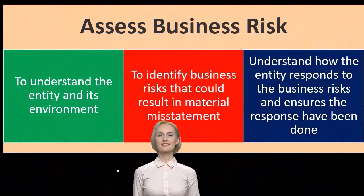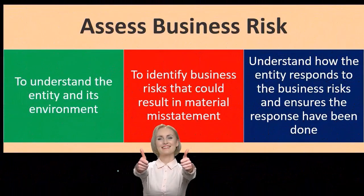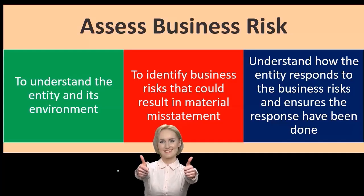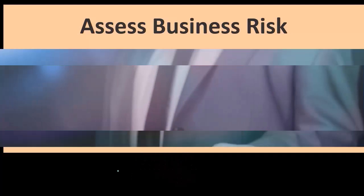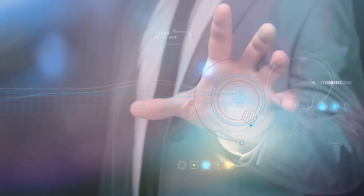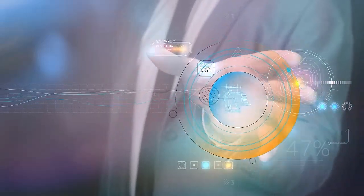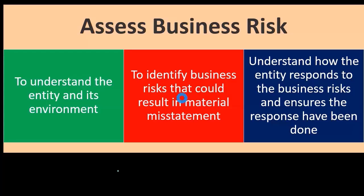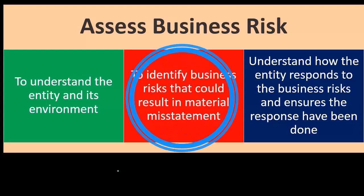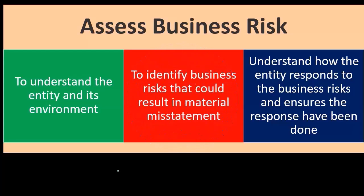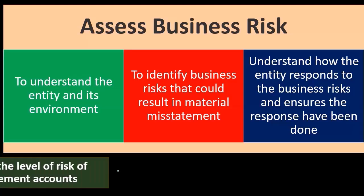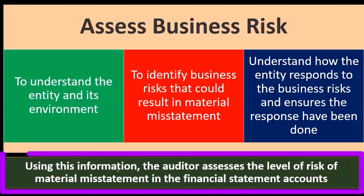If they affect the revenue in some way, then of course they know that and they should have a system of controls set up in order to deal with whatever risk is involved for that particular industry. We want to understand the risk, we want to ask the business how do you deal with this risk, and see if they are implementing whatever controls and functions they have in place to deal with that particular risk for that particular type of business entity.